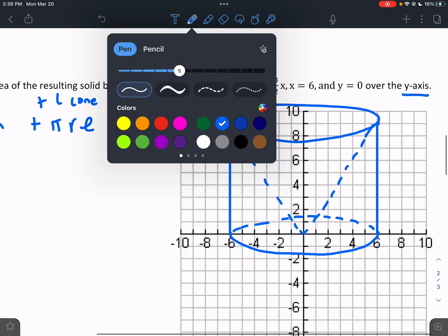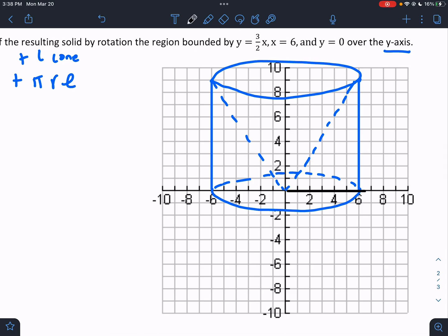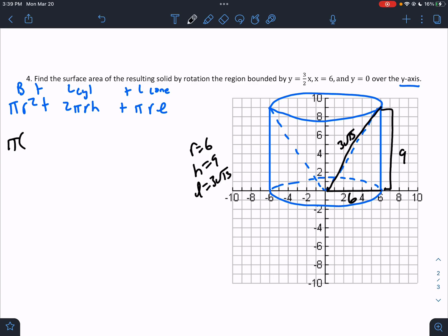Well, we know – well, let's actually – let's go see what we know. So we know that the radius here – I said it earlier – the radius is 6. We know that the height is 9. We did this on the last problem. We know that the slant height is 3 root 13. So we have a radius of 6, a height of 9, and a slant height of 3 root 13. So it's going to be pi times 6 squared plus 2 pi times 6 times 9 plus pi times 6 times 3 root 13.